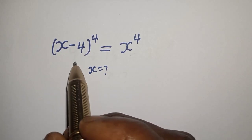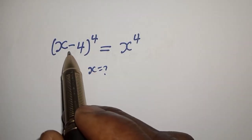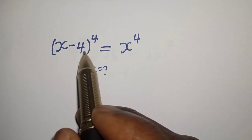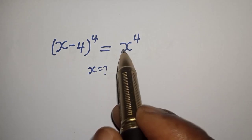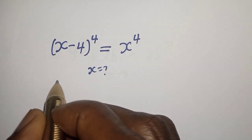Hello. How to solve for S from this equation: S minus 4 raised to the power of 4 is equal to S raised to power 4. Solution.